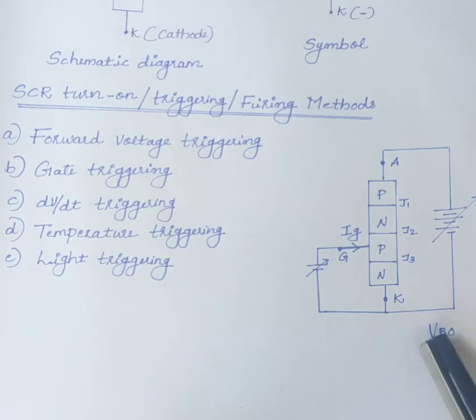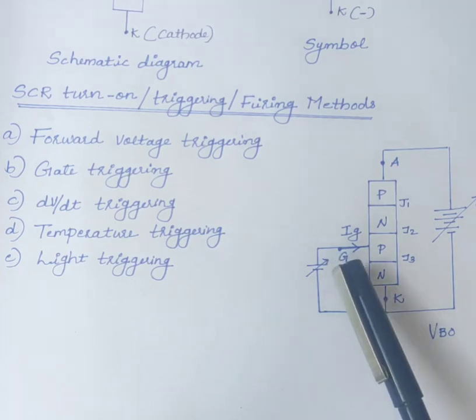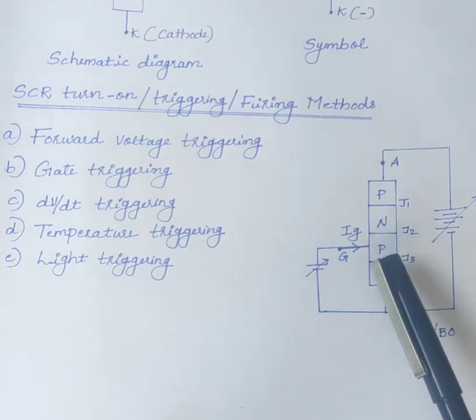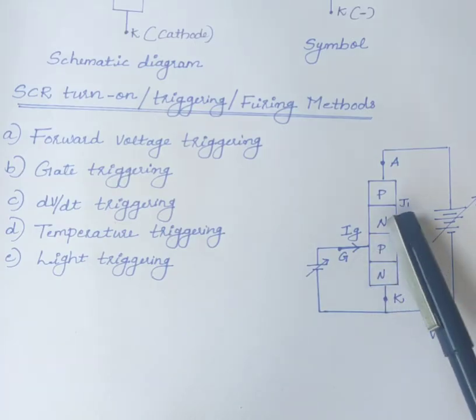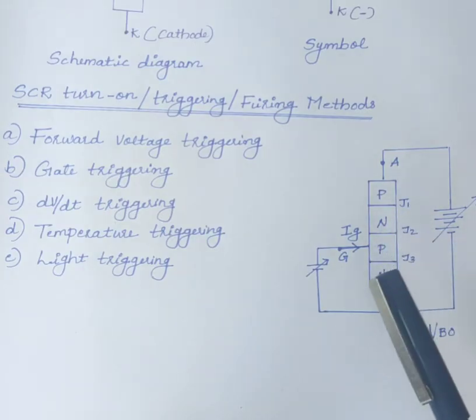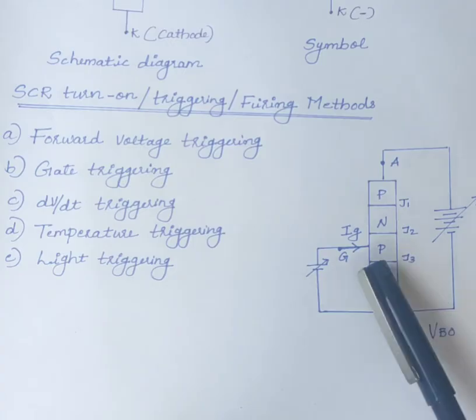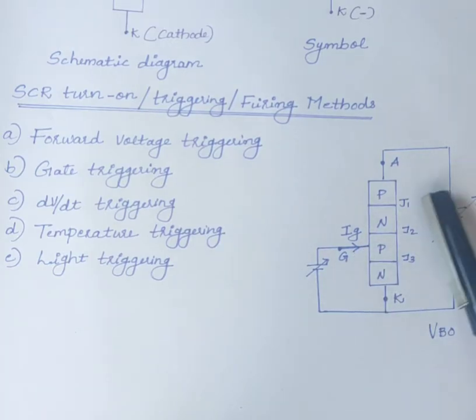This causes the junction J2 to break down at an applied voltage lower than VBO, that is, forward-breakover voltage. If the magnitude of gate current IG is increased, more electrons will reach the junction J2. As a result, SCR is turned on at a much lower forward applied voltage.